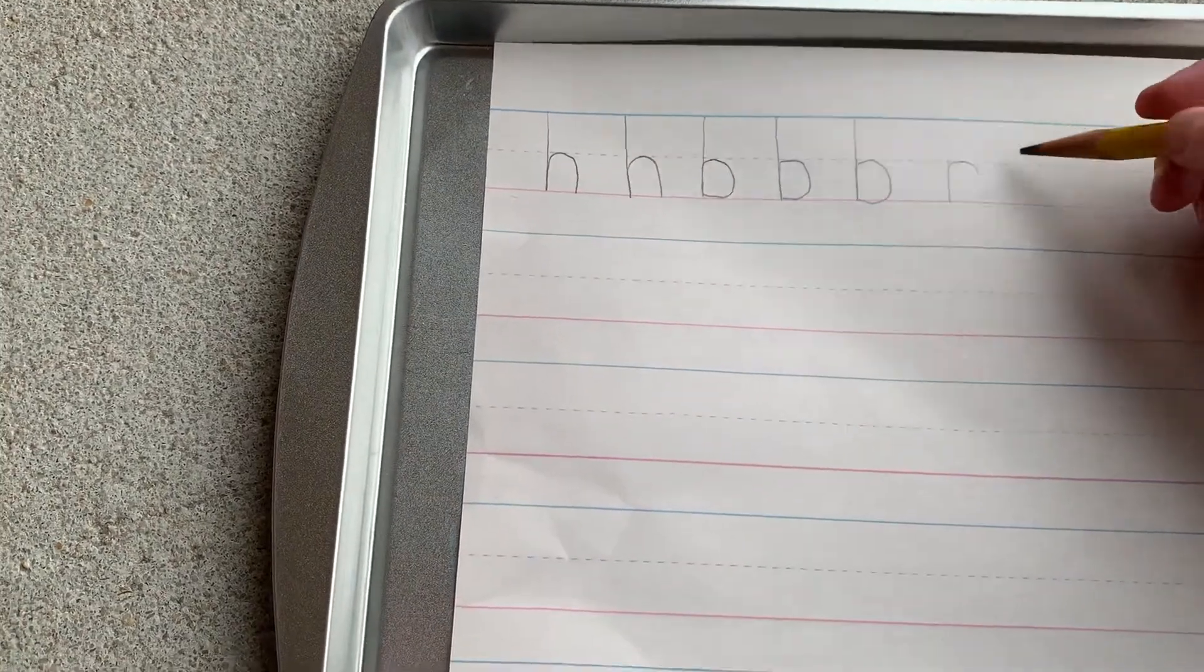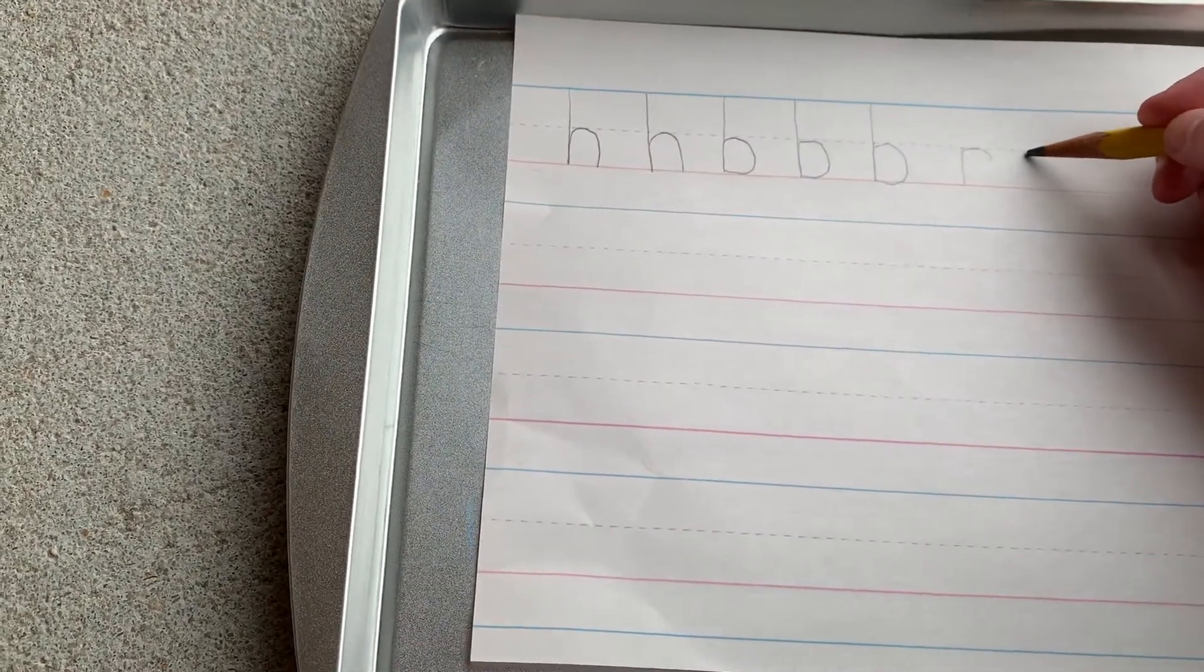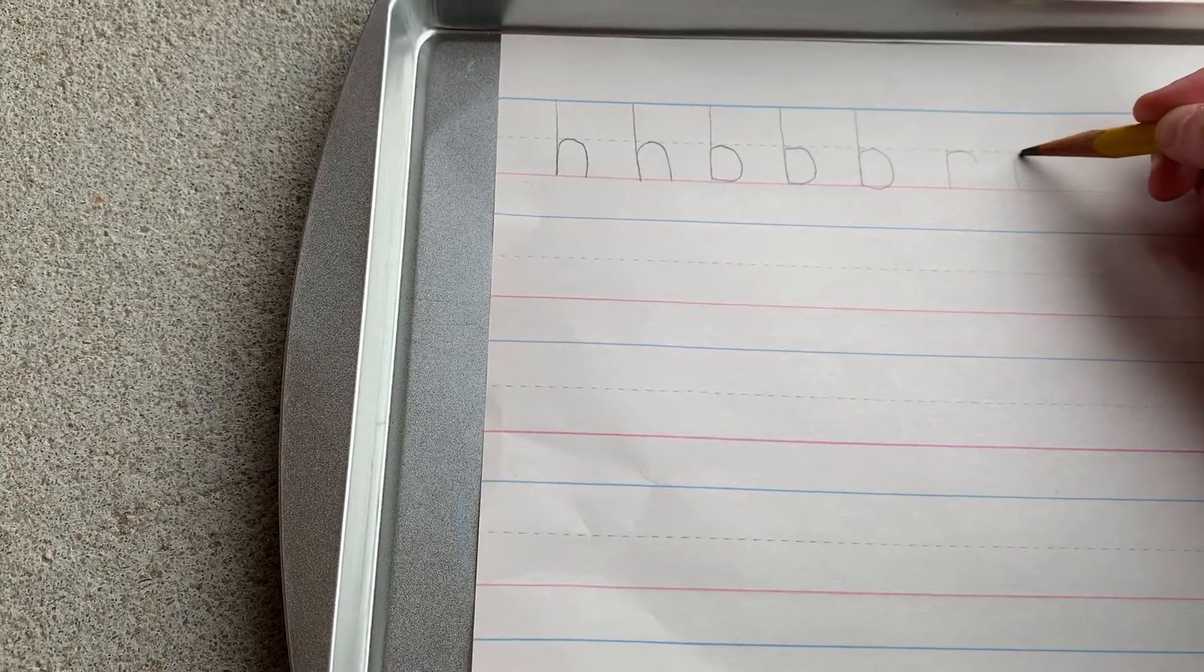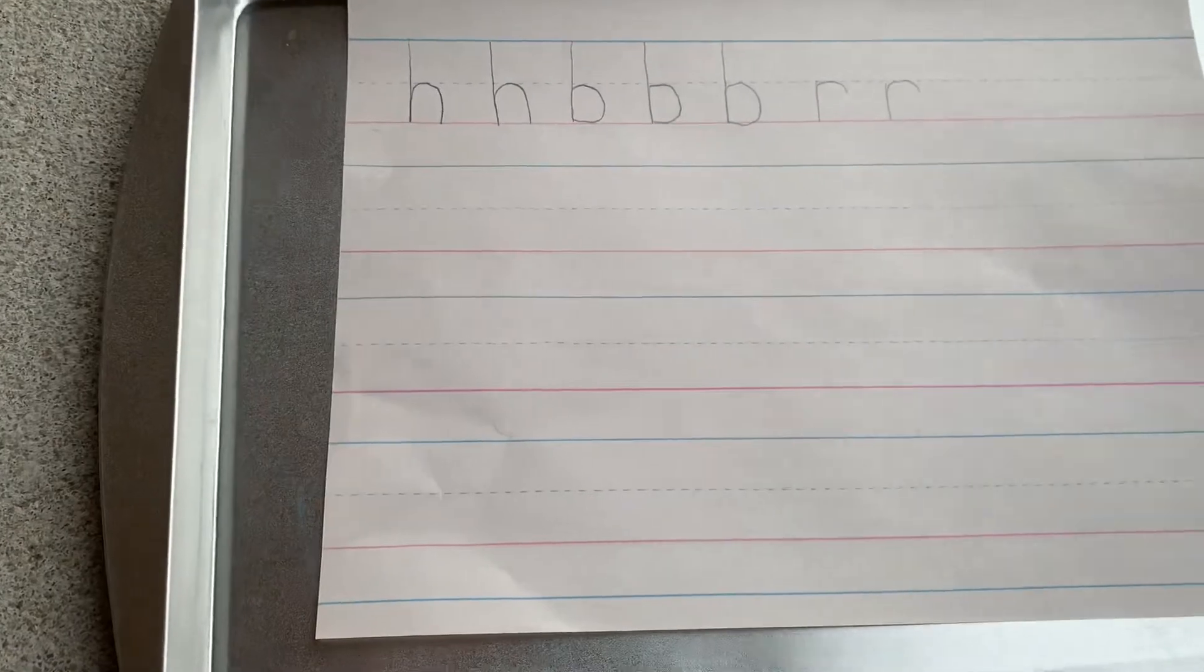All right, touch that dotted line again. It's short. R drops down, bounces back up, and onto the rabbit's head.